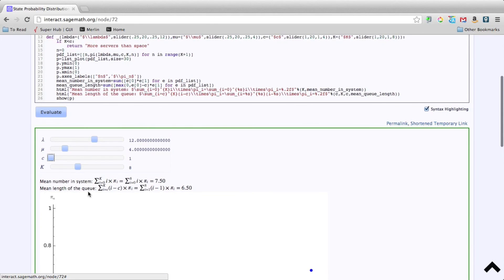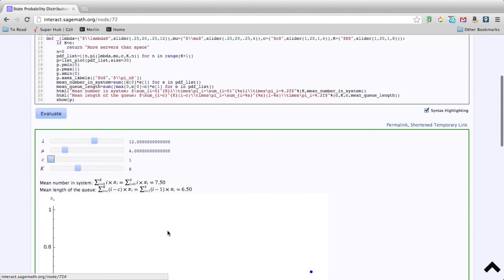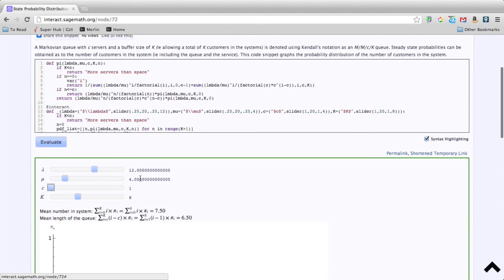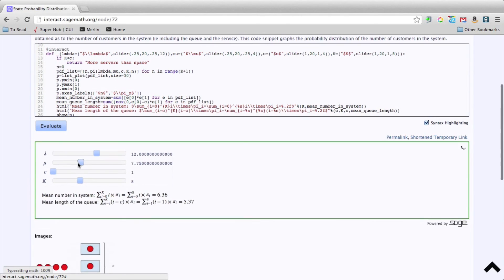And that's just one type of consideration that you can do with some basic queuing theory. So this code is up there, I'll put a link to it in the video, feel free to play around with it and you can change various parameters to see what happens.